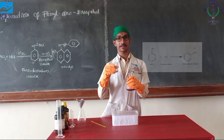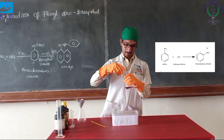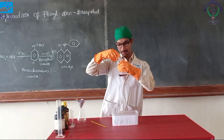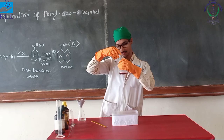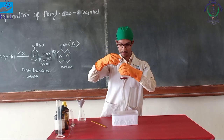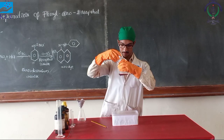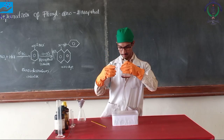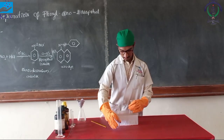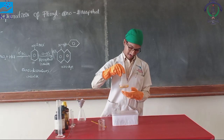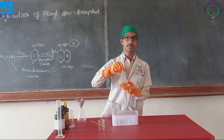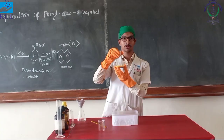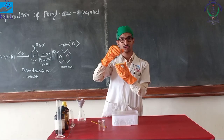Now add the ice-cold sodium nitrite solution to the ice-cold anilinium chloride solution with constant stirring, added dropwise. The solution has turned orange in color. This is now called the benzene diazonium chloride solution. Keep it again in the ice bath to bring the temperature back to 0 to 5 degrees Celsius.